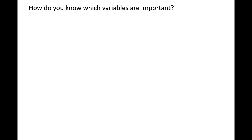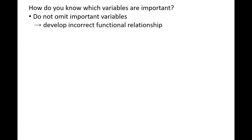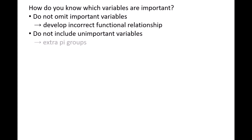Determining which variables are important in the system you are studying is sometimes difficult. You need a good understanding of the general behavior of fluids and of the physical laws governing the fluid behavior in the system. Great care should be taken in step one to ensure that you don't accidentally omit important variables. If you do forget an important variable, you'll end up with an incorrect functional relationship. You also should take great care to only include variables that impact the system significantly. If you include unimportant variables, this will lead to the creation of extra pi groups, and ultimately will cause you to conduct unnecessary experiments.